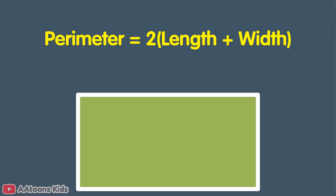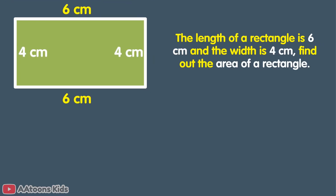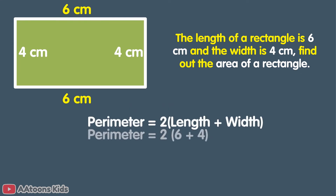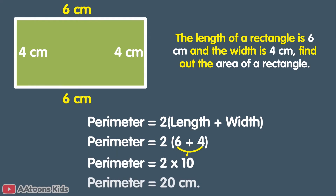Now solve this using the formula 2 times (length plus width). Length is 6 cm and width is 4 cm. First add 6 plus 4 to get 10, then multiply 10 by 2 to get 20. So the perimeter of the rectangle is 20 cm.